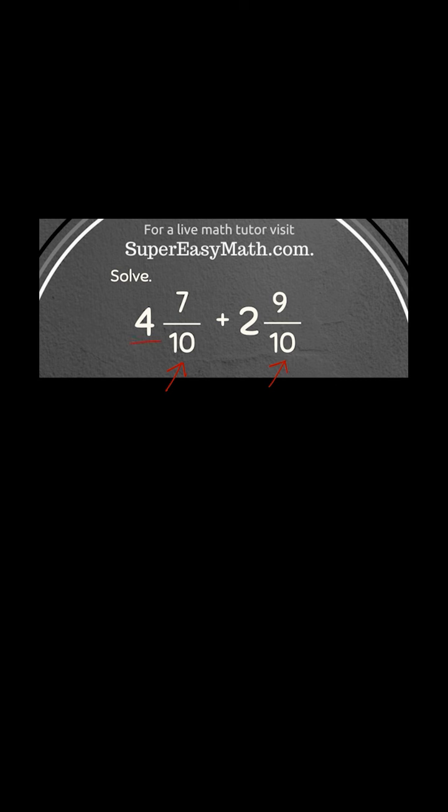I'm going to start off by adding my whole number. So 4 plus 2 is 6, and then I have 7 tenths plus 9 tenths.